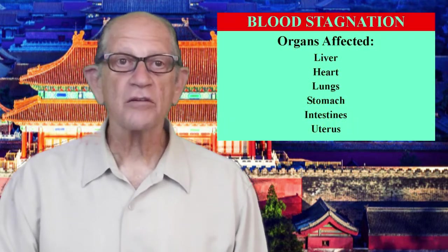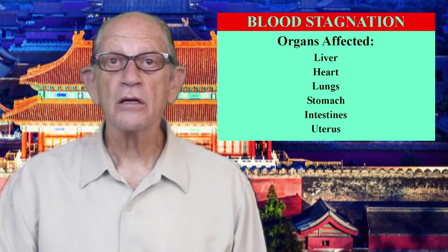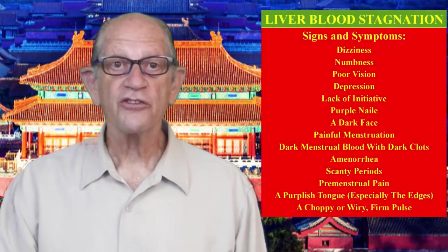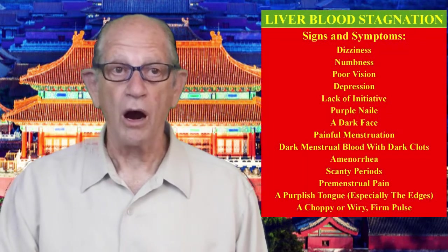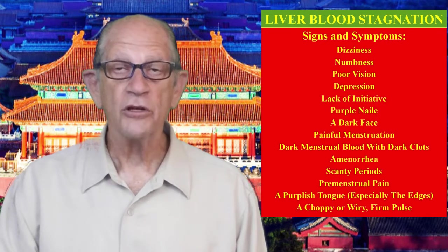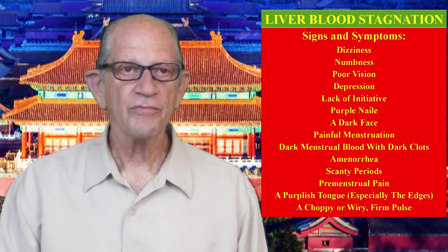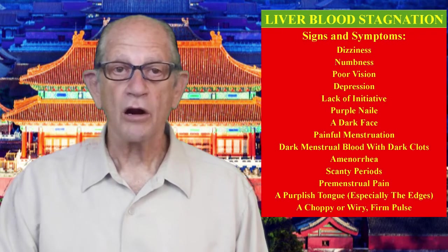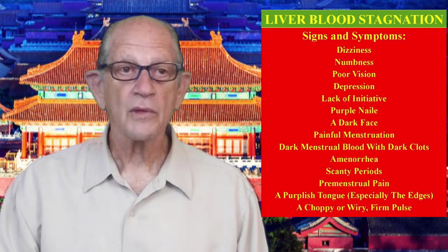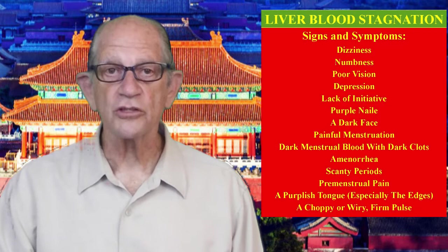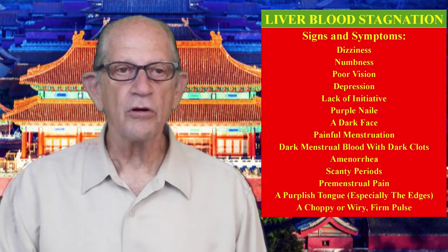The organs affected by blood stagnation are the liver, heart, lungs, stomach, intestines, and uterus. The signs and symptoms associated with liver blood stagnation are dizziness, numbness, poor vision, depression, lack of initiative, purple nails, a dark face, painful menstruation, dark menstrual blood with dark clots, amenorrhea, scanty periods, premenstrual pain, a purplish tongue especially on the edges, and a choppy or wiry firm pulse.